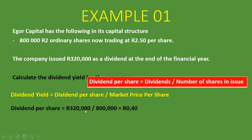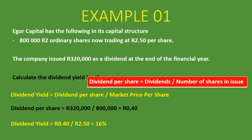Now that we have the dividend per share and the market price per share of R50, we can calculate the dividend yield. The dividend yield is 40 cents divided by R50, which gives us 16%. This means that of the current market price of the share, the company pays out 16% as a dividend. So as a prospective investor, you can expect a return of 16% based on the current market price.